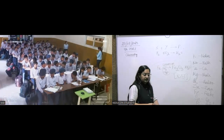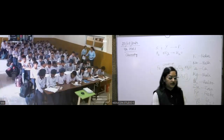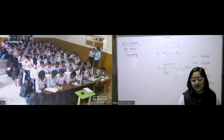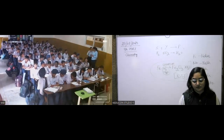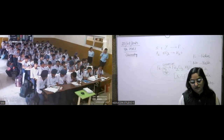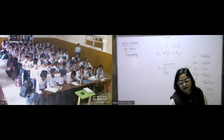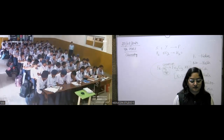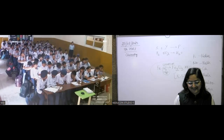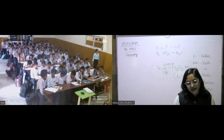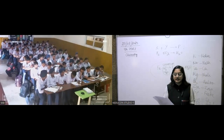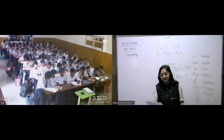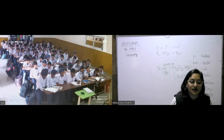Which of the following are physical changes involving iron? Melting of iron metal — physical change. Rusting of iron — chemical change. Bending of iron — physical change. Drawing wire of iron — physical change. So rusting is the only chemical change here.